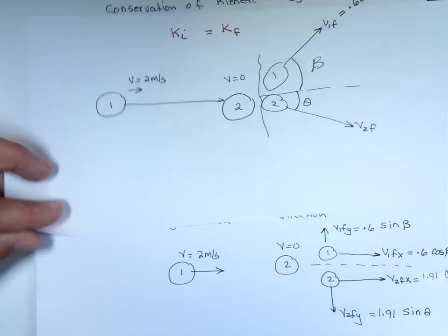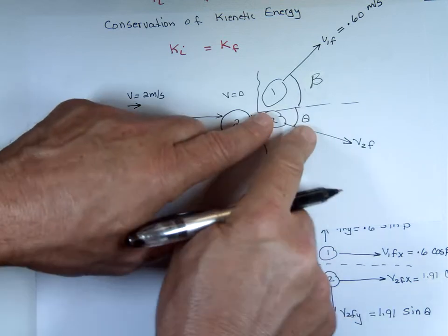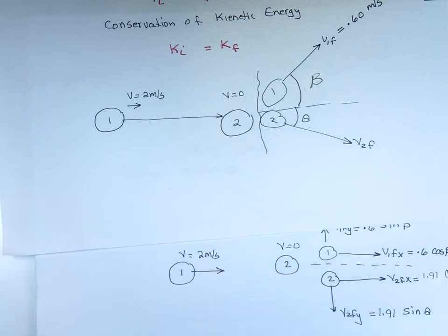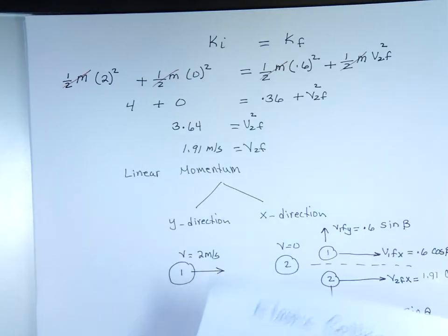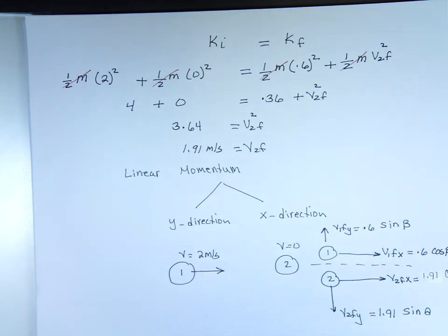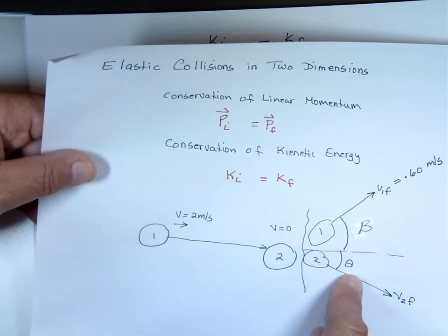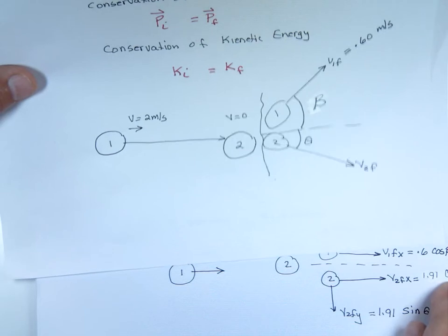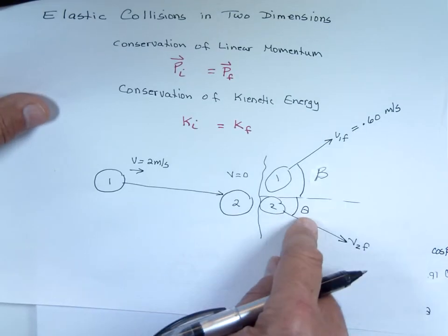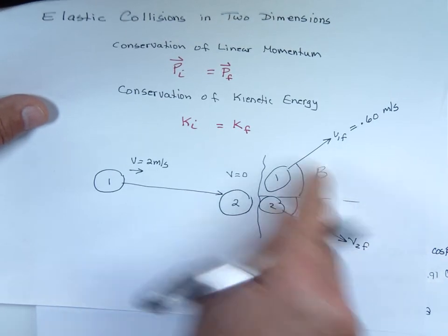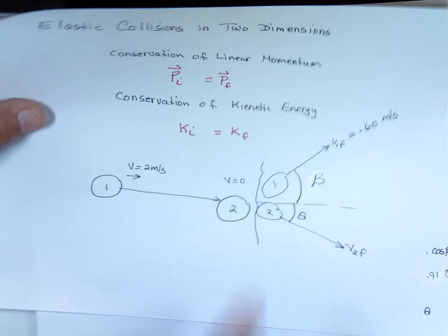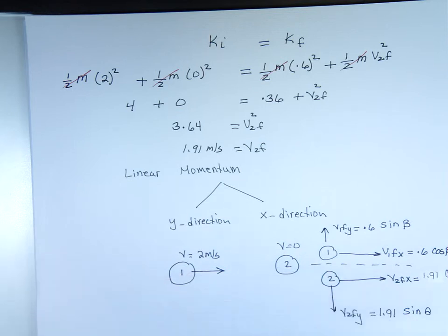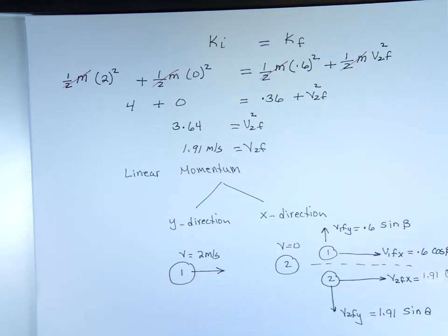The angles are measured with respect to the x-axis for both stones, so cosine always gives the x-component and sine gives the y-component. If the angle were measured from the y-axis, it would be the other way around. So now we do conservation of linear momentum in each direction — in the y-direction and in the x-direction.